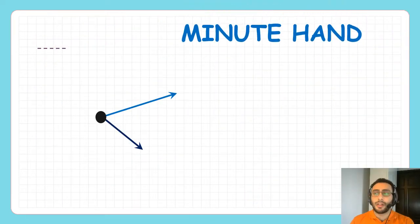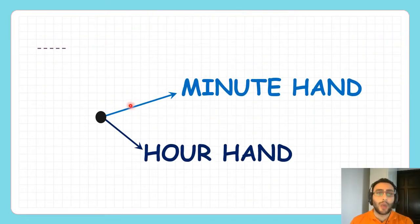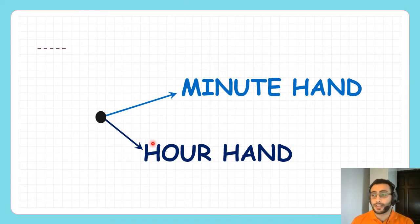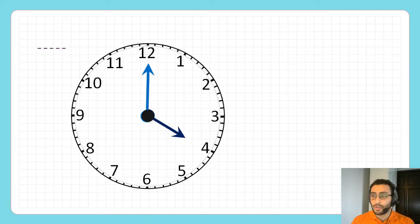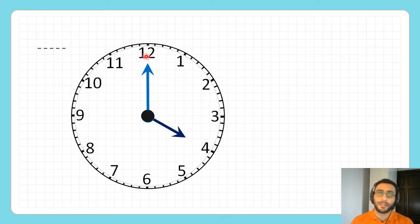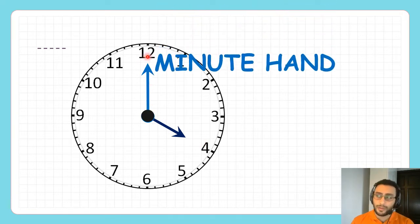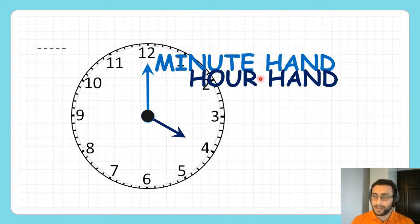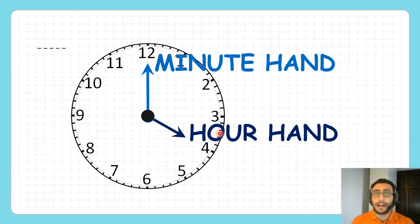A clock has two hands. The long one is called the minute hand, and the short one is called the hour hand. For example, here we see the hour hand is pointing at four, and the minute hand is pointing at 12. So this is the minute hand and the hour hand.